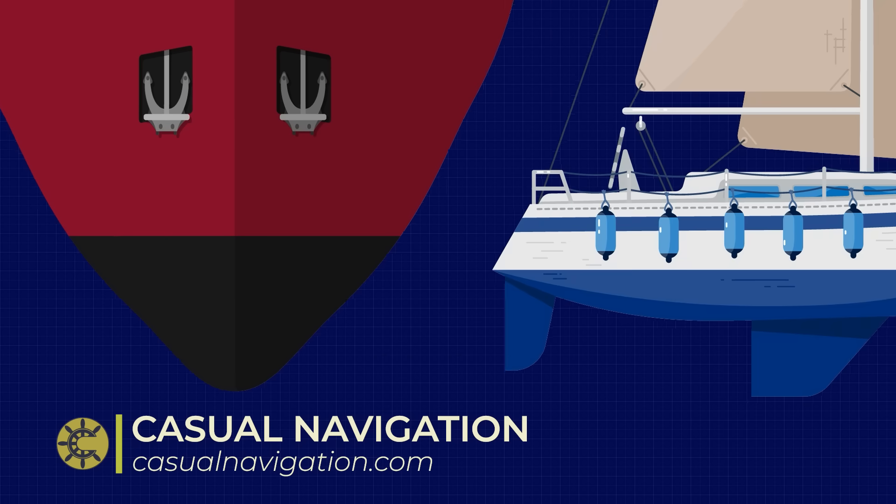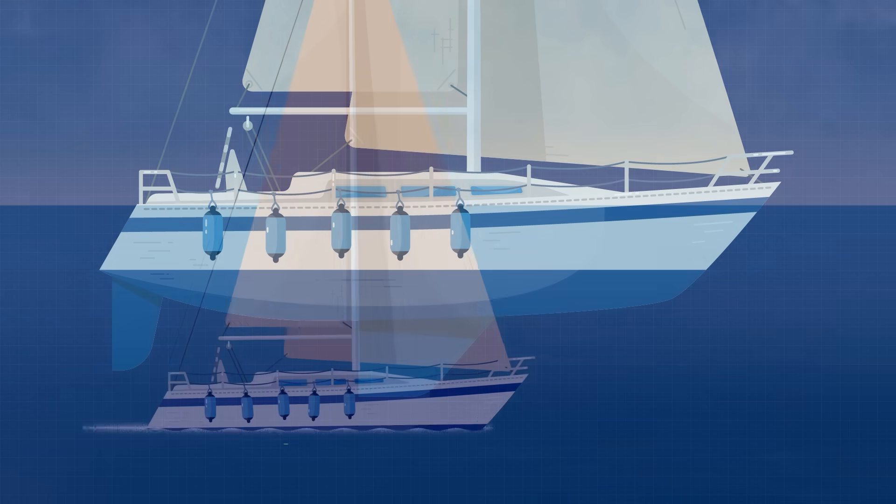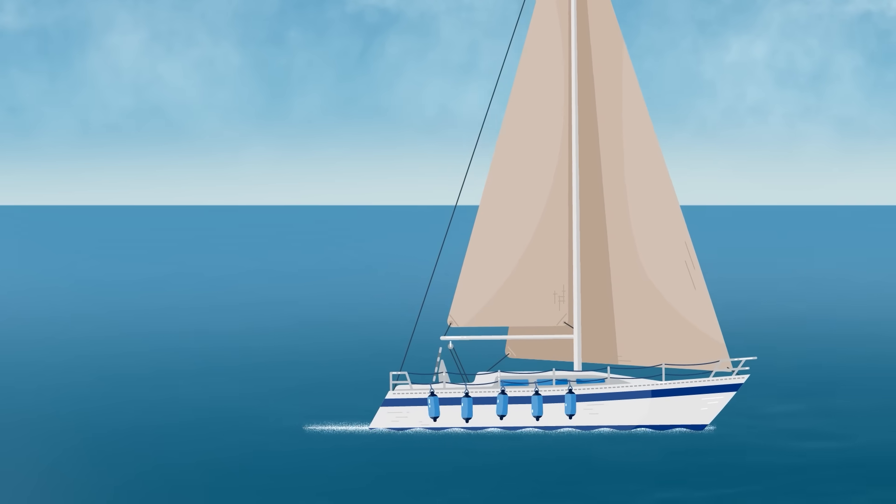Have you noticed how modern cargo ships have flat bottoms while older ships and sailing yachts have deep keels instead? Deep keels are a very intuitive way of keeping a floating vessel stable.